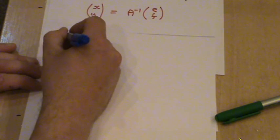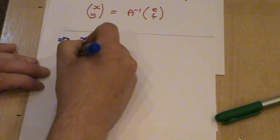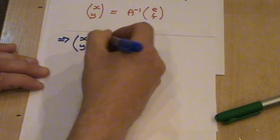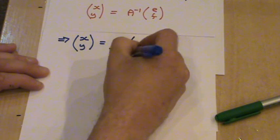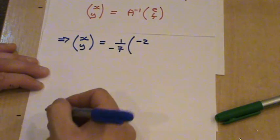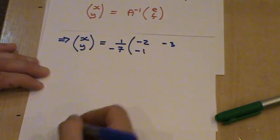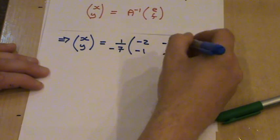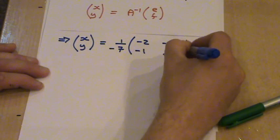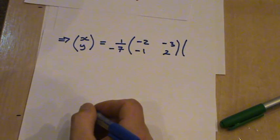So here, this implies xy is going to equal 1 over minus 7, a minus 2, a minus 1, minus 3, and a 2. And then this is times the 8 minus 3.